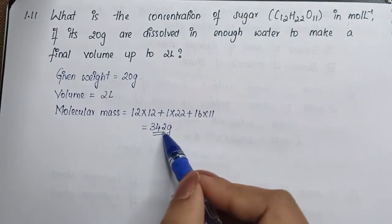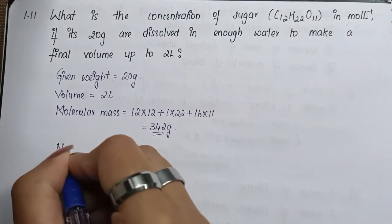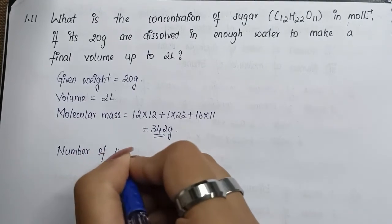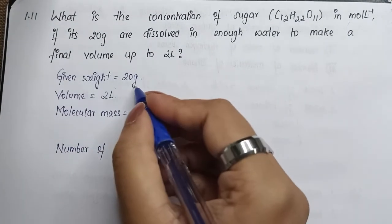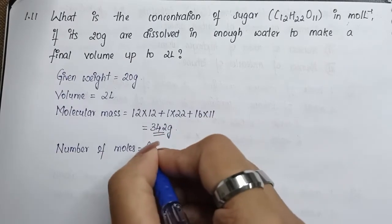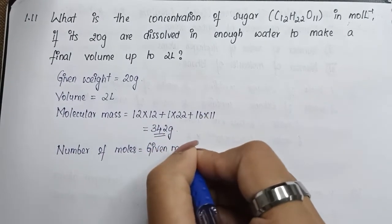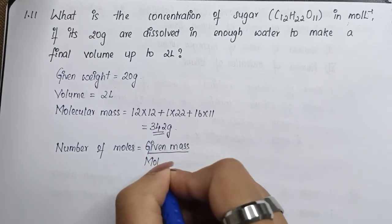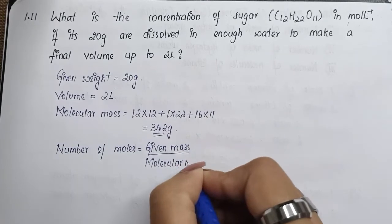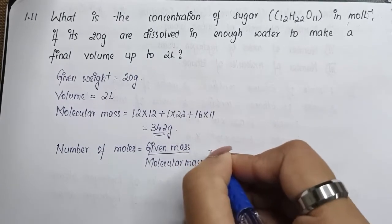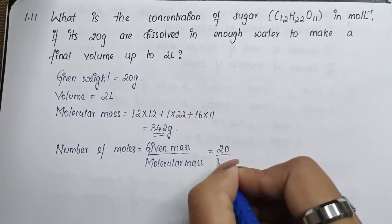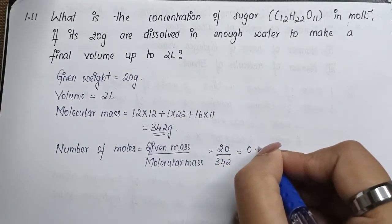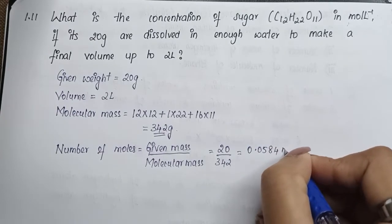Now we have given mass and we have the molecular mass, we can find out number of moles. So number of moles equals given mass by molecular mass. Given mass is 20, molecular mass is 342. When we divide it you will get 0.0584 moles.